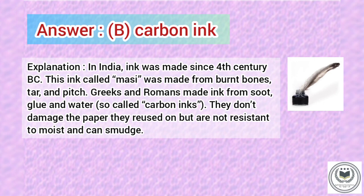Explanation. In India, ink was made since the 4th century BC. This ink, called massi, was made from burnt bones, tar and pitch. Greeks and Romans made ink from soot, glue and water — so-called carbon inks. They don't damage the paper they are used on, but are not resistant to moisture and can smudge.